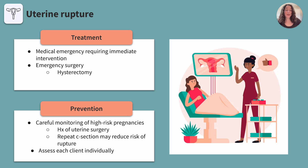Treatment for these clients includes immediate intervention since this is a medical emergency. It can include delivery of the baby and an emergency hysterectomy, or removal of the uterus, especially if the rupture is severe or there is excessive bleeding. Outside of treatment, prevention of this medical emergency is key. This includes careful monitoring of high-risk pregnancies, such as those with a history of uterine surgery. Repeat c-sections may reduce the risk of rupture, and each client should be assessed individually to determine the best plan of care.